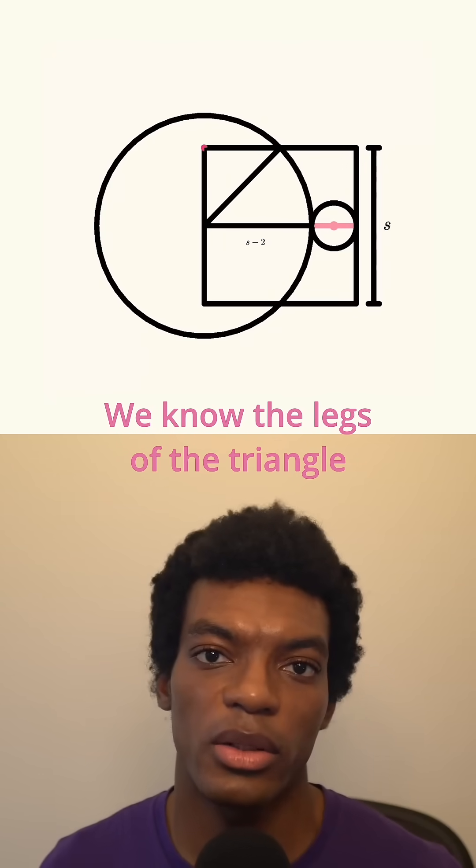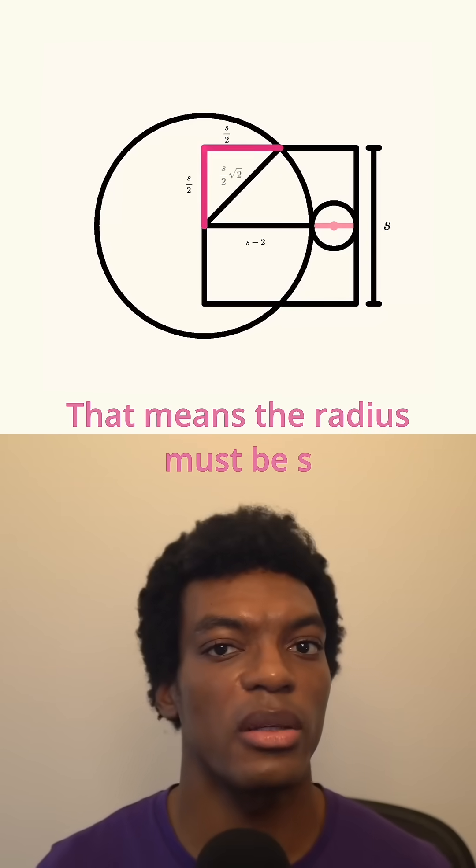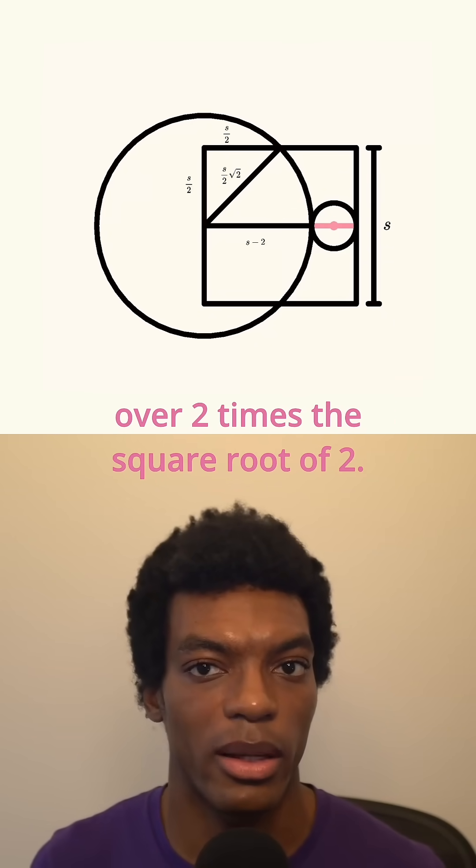We know the legs of the triangle are half the side length of the square, or S over 2. That means the radius must be S over 2 times the square root of 2.